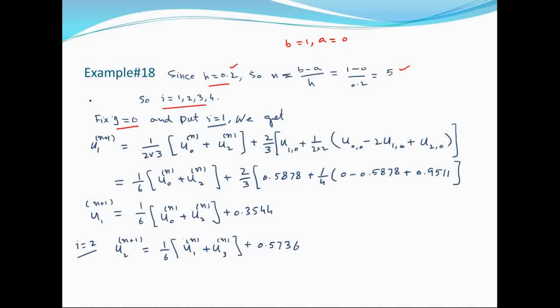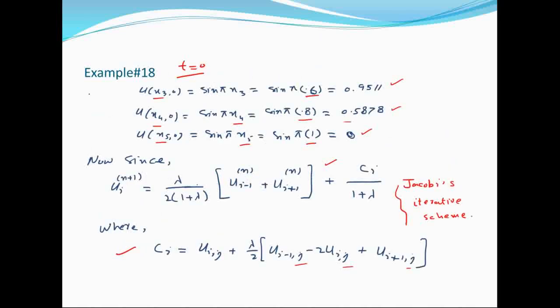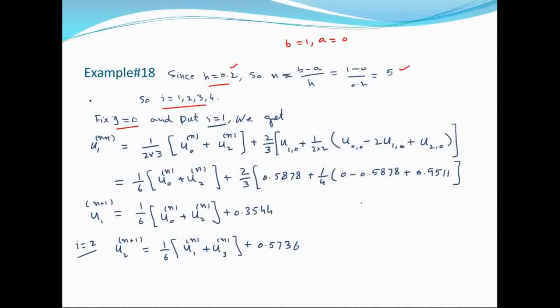j=0 put करने पर lambda की value 1/2 और 1/(1+lambda) = 2/3 रखेंगे जो 1/3 देती है। i=1 put करने पर यहाँ 0 और यहाँ 2 आएगा।